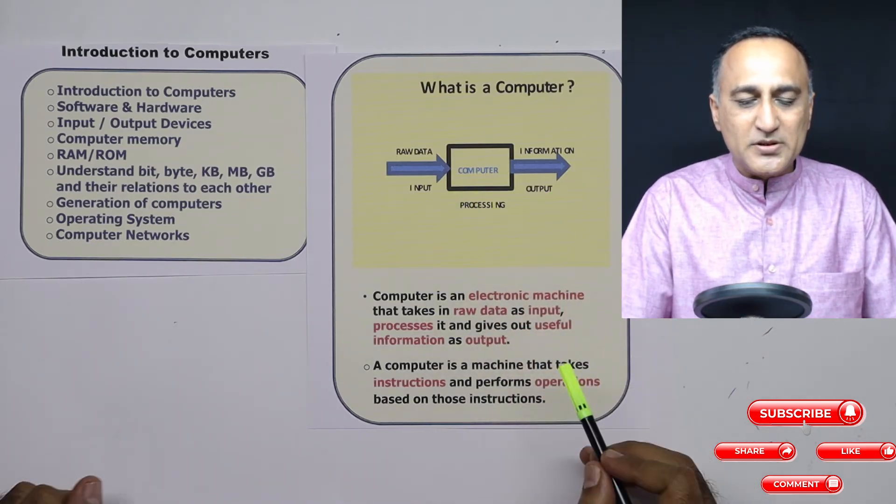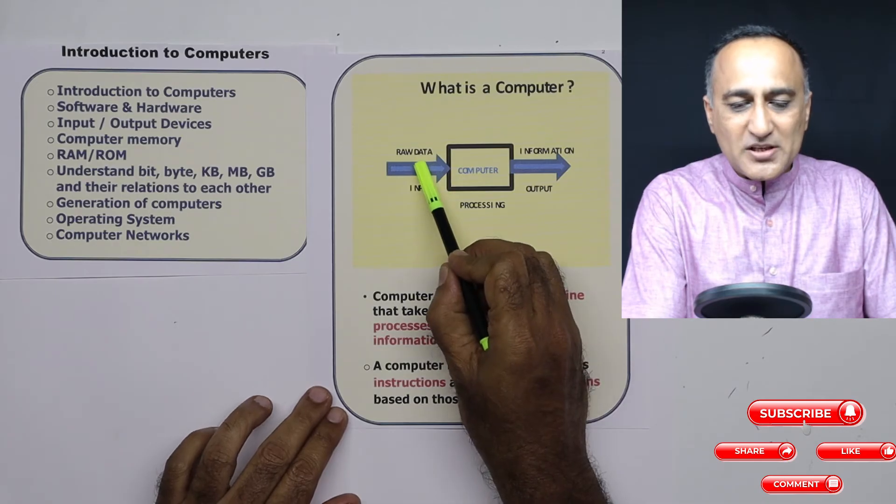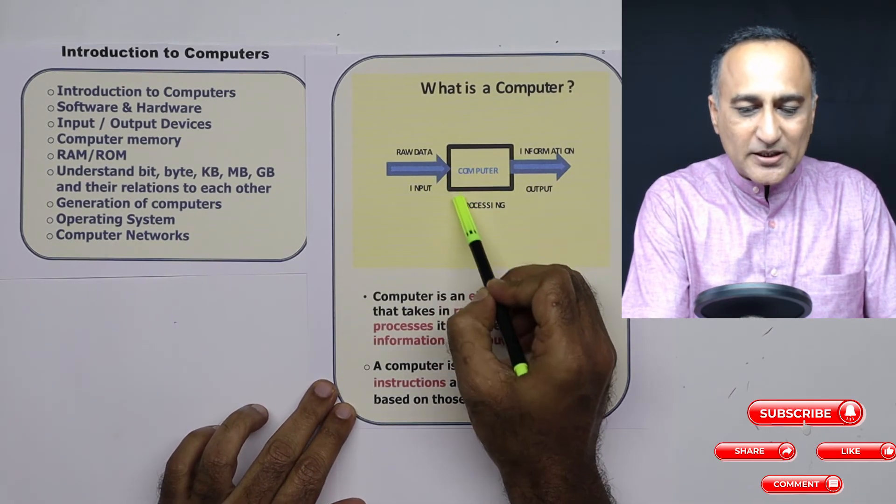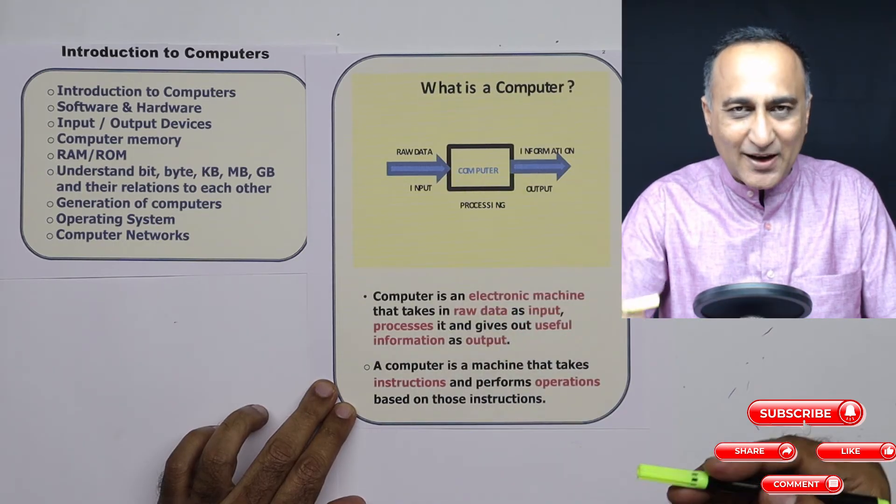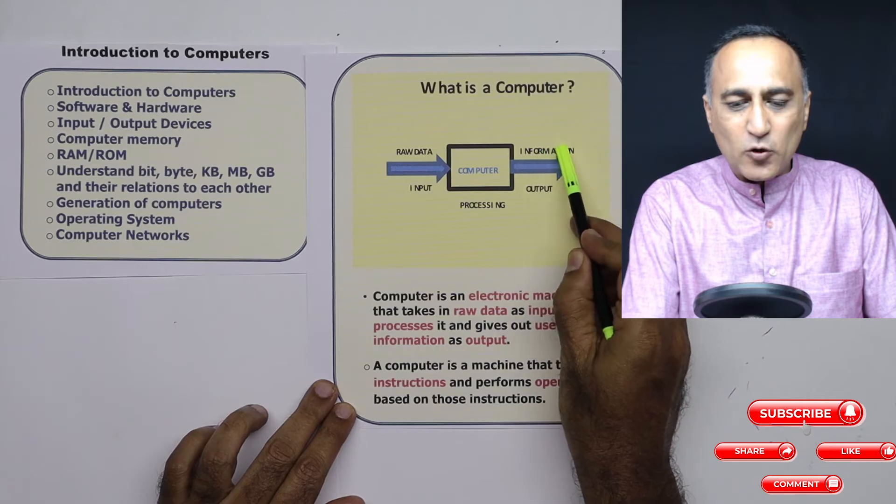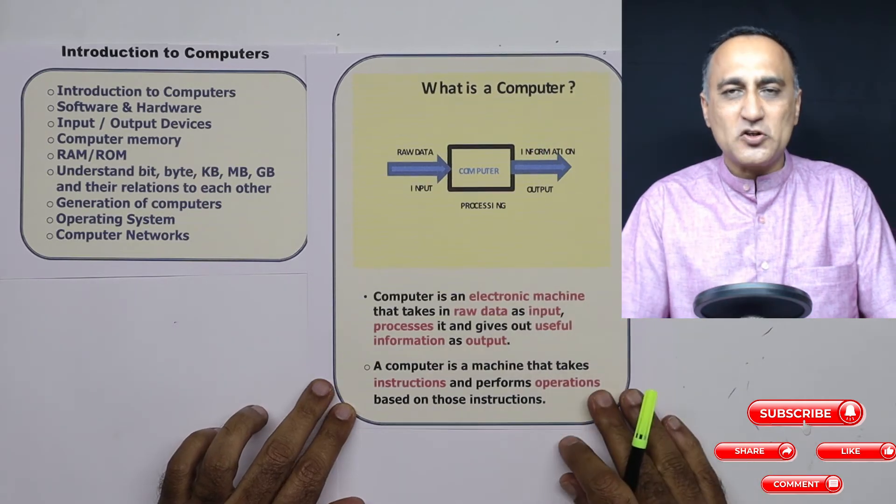So a computer will help me do these things. The computer will generally take input raw data, it will do certain processing - that means it will do certain calculations, decision making, etc., and it will provide us an output in the form of information.